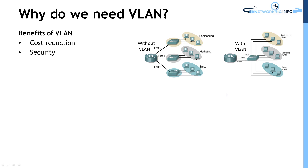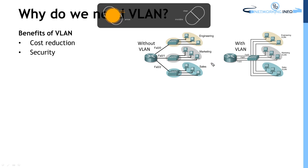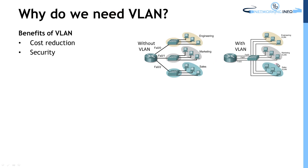The second benefit is security. Security is more of a concern when we send data from one network to another at the Layer 3 level. If we have three Layer 3 networks sending data through one switch, that data is not secure. With VLAN, the sales department will not communicate with the marketing department.